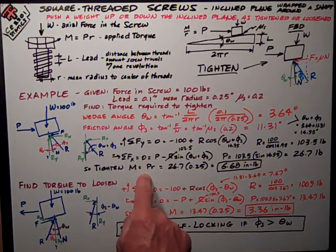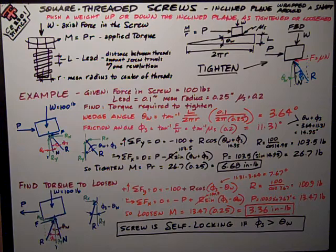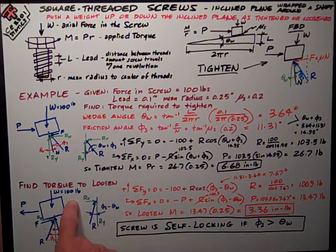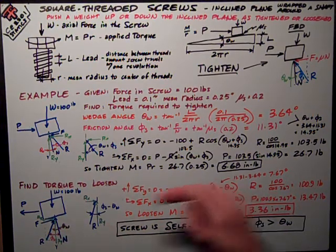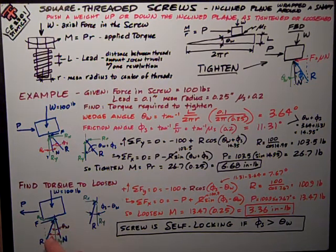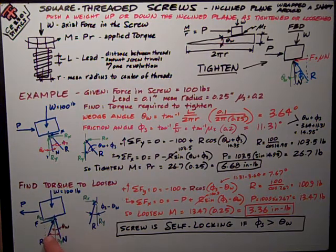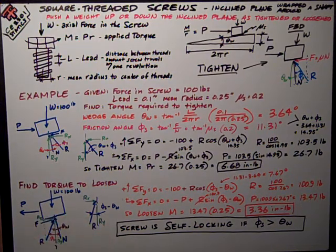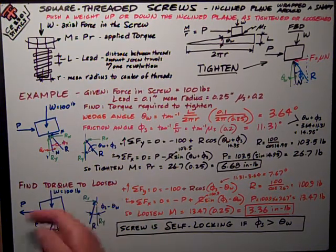Now the other part I have to the question would be, find the torque to loosen it. And I'm also interested in, is it self-locking? Will it come unscrewed by itself? So I do a free body diagram. In this case, I'm pushing the weight down the hill, so it's going to be easier. I've still got the same 100 pounds force axial in the screw.